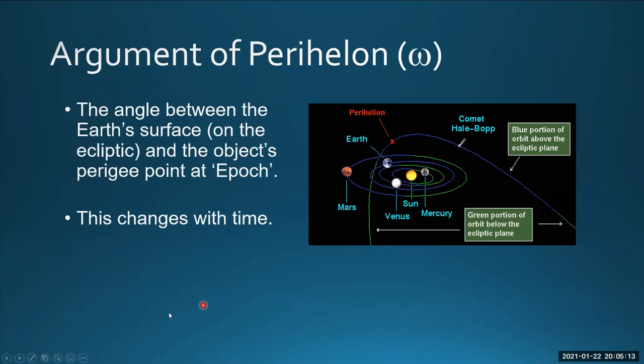The next thing is argument of perihelion. It's usually represented with a lowercase omega. Sometimes people write a W instead. This is the angle between the Earth and the object's perigee point when the elements are computed at epoch. Here again, we have yet another angle. It takes a lot of angles to define this stuff.